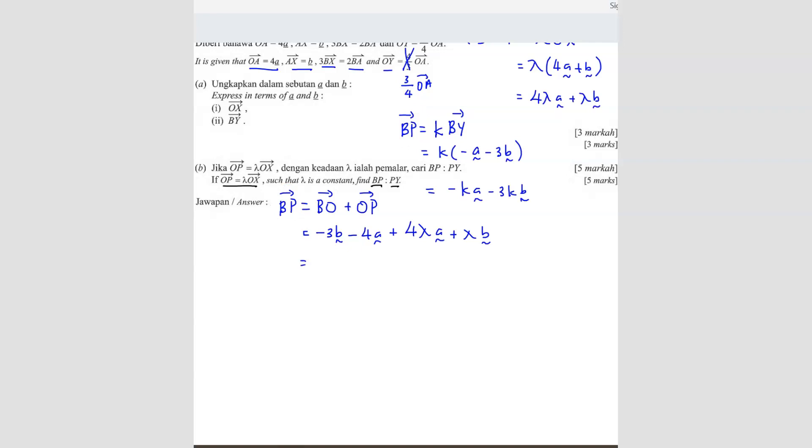Let's simplify this first. A and A, we can put them together. So we get 4 lambda minus 4A. And then B part, we have plus lambda minus 3B. So since we have two equations of BP, we can combine them. That means 4 lambda minus 4A plus lambda minus 3B is equals to the other BP equation, negative KA minus 3KB. So what we can do is we can compare the same vector. A and A. We can compare. So that means this should be equals to this 4 lambda minus 4 equals negative K. And then the B one will be lambda minus 3 equals to negative 3K.